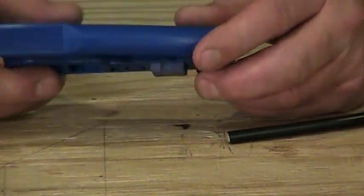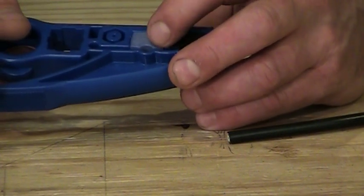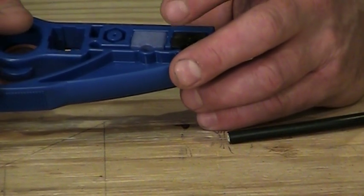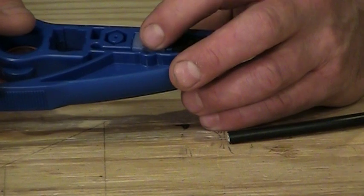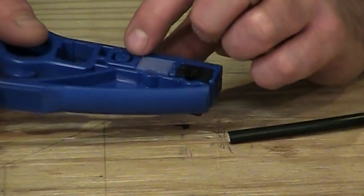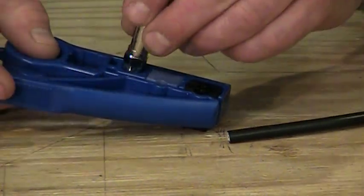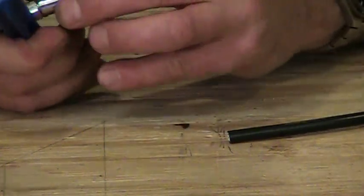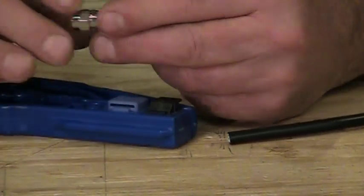It has a cartridge for stripping UTP category 5E cable, and there is actually an insert here that we can use to help push sometimes a connector on the wire. So a lot of little features to that tool,